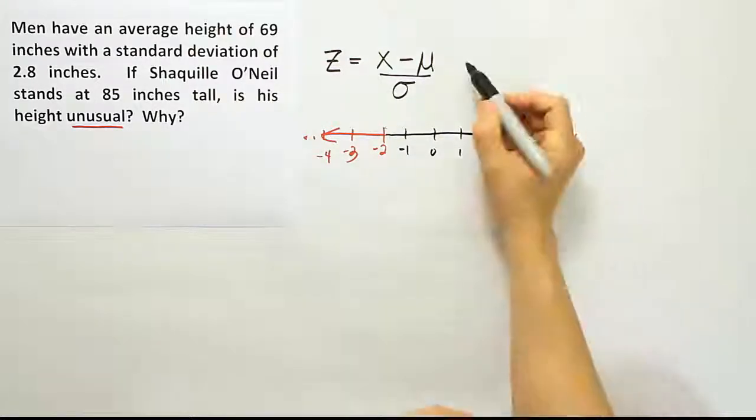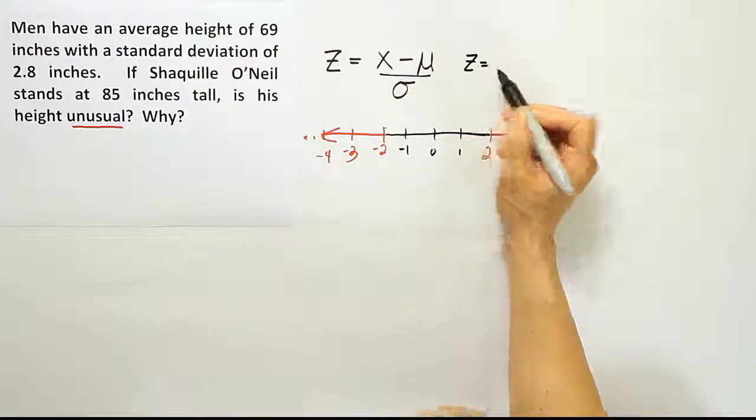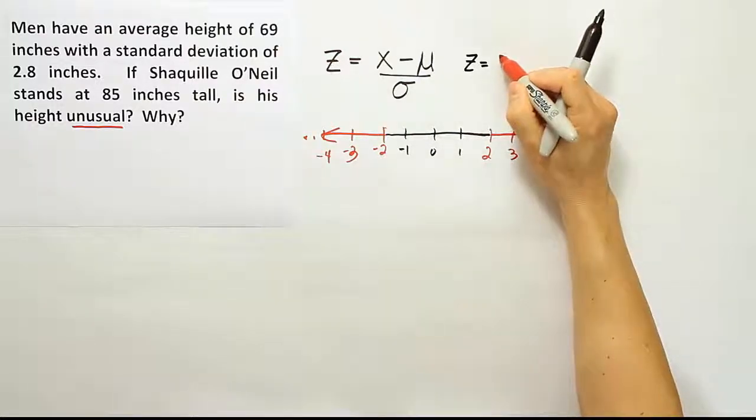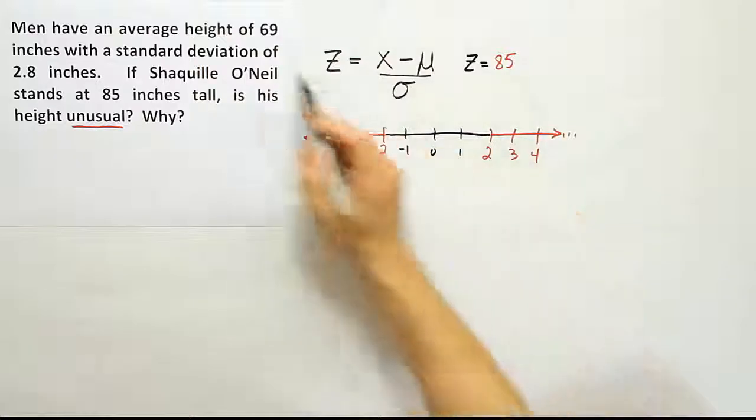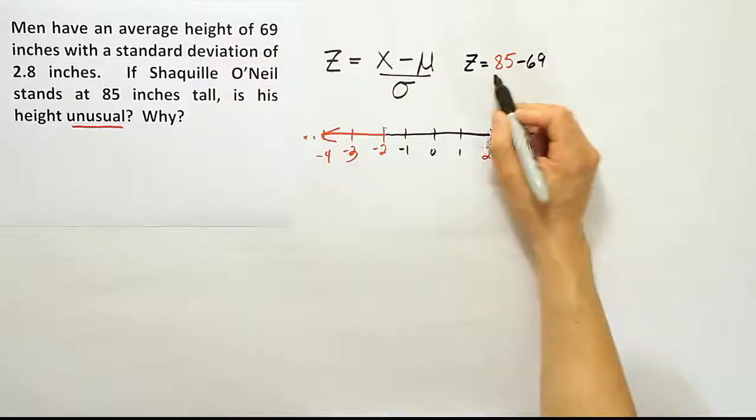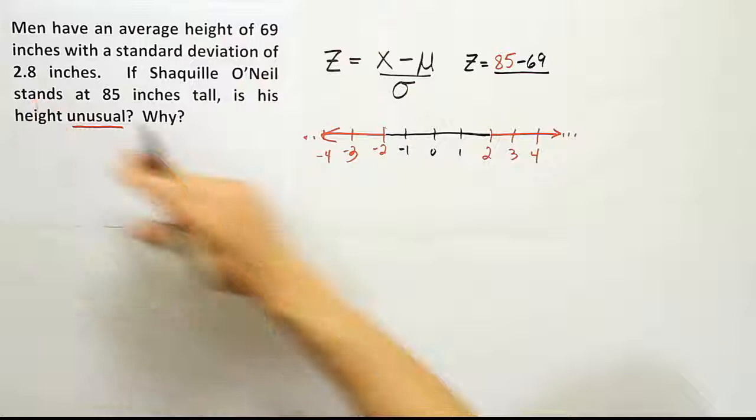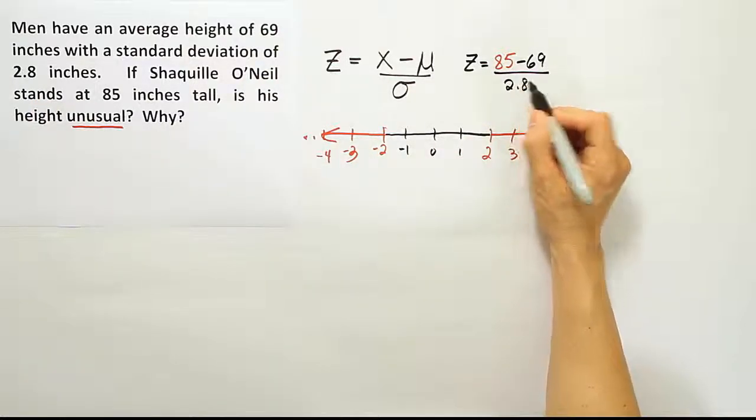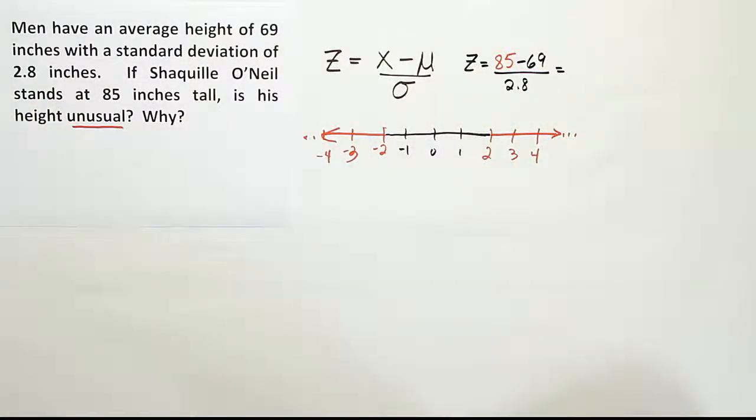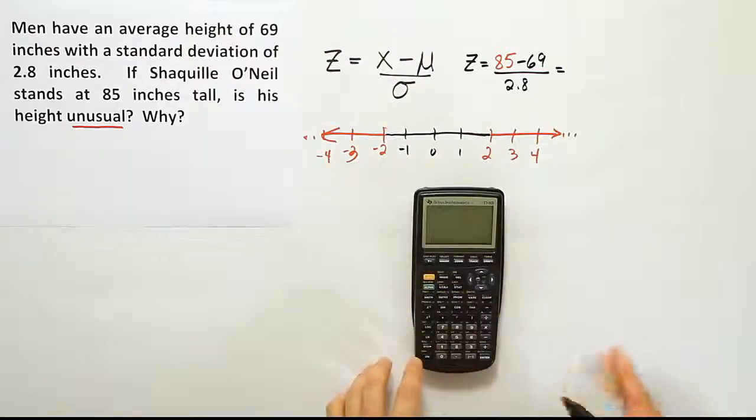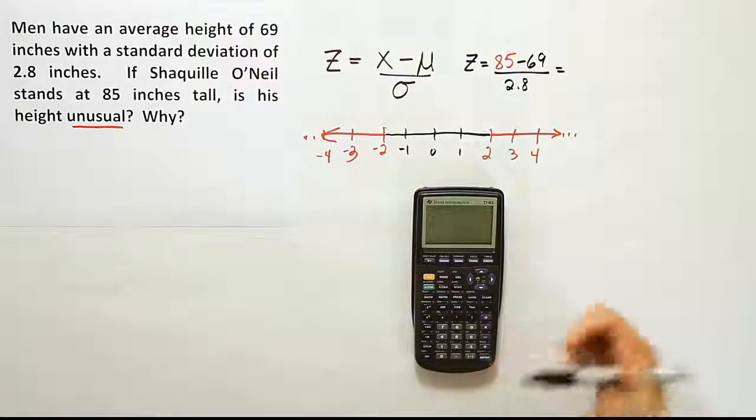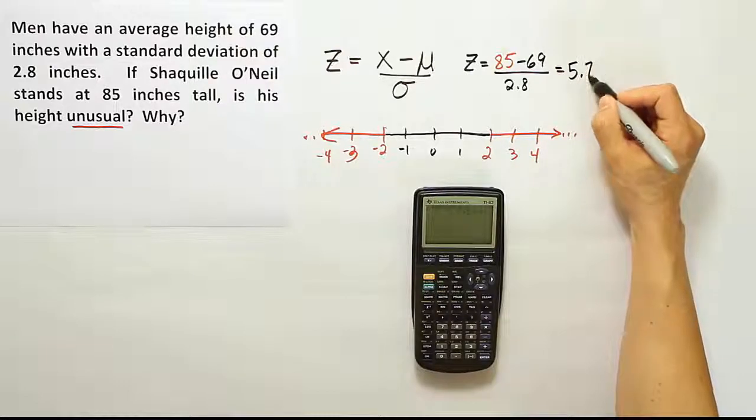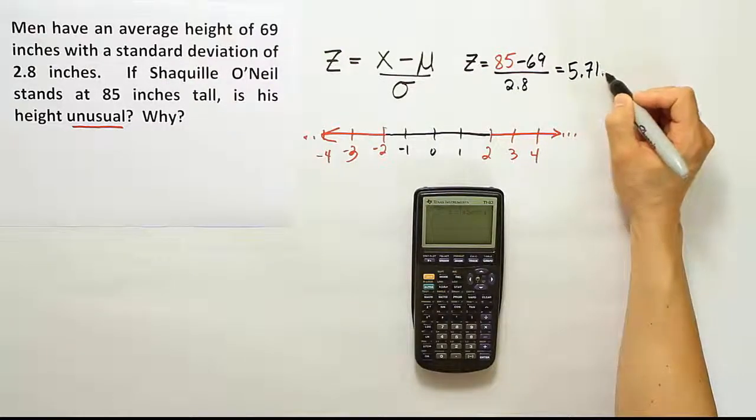Let's go ahead and put his height into the z-score formula. So his height is 85 inches. I'm going to plug that in here for x. And then the mean is given as 69, that's the average height for men. And the standard deviation is 2.8. From there we'll work out the numbers. So if I enter those values into my calculator, we'll have 85 minus 69 divided by 2.8. And the result turns out to be 5.71 dot dot dot.